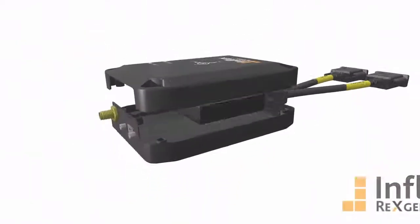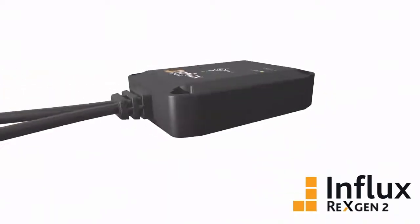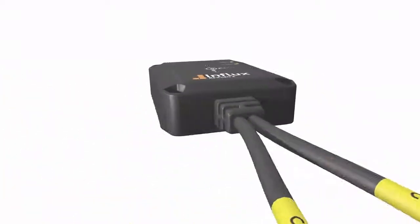Our RexGen II dataloggers have an inbuilt 6-axis IMU sensor, which can be used in autonomous vehicles for purposes such as dead reckoning, but we'll cover that a little later in this video.